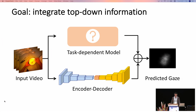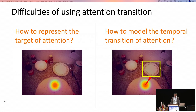Our goal is to integrate top-down information into gaze prediction by combining a task-dependent model with the bottom-up encoder-decoder-style network to better predict gaze position. Two difficulties arise: how to represent the target of attention, and how to model the temporal transition of attention.